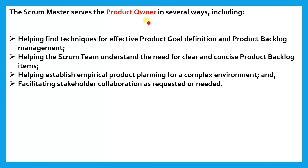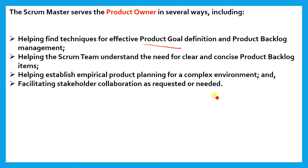Now, how does the Scrum Master serve the product owner? There are a few key points: helping find techniques for effective product goal definition and product backlog management; helping the Scrum team understand the need for clear and concise product backlog items; helping establish empirical product planning for a complex environment; and facilitating stakeholder collaboration as requested or needed. These are the ways they help the product owner.